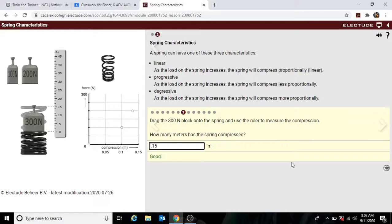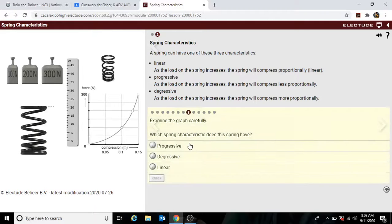Okay. So let's look at the graph now. See it swoops up. Well, it's not linear. So it either has to be progressive or degressive. As the load on the spring increases, and it's been increased 100, 200, 300, the spring will compress less proportionately. So it's less proportionately, it's less linear. So that would be progressive.